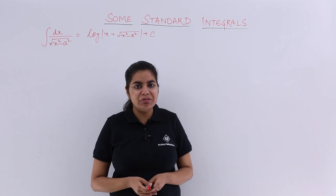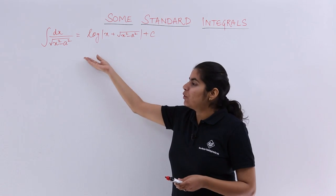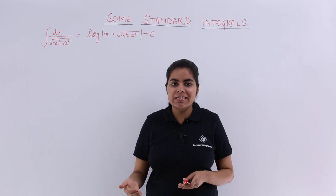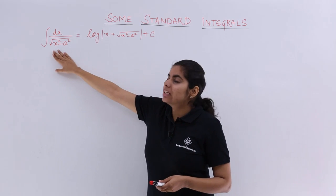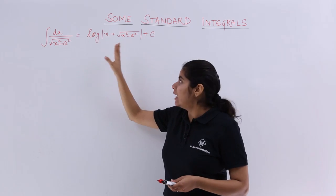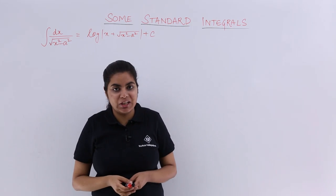Let's see the next standard integral which is dx upon under root x square minus a square. This time we have square root is equal to log x plus this thing which is x square minus a square under root plus constant of integration.